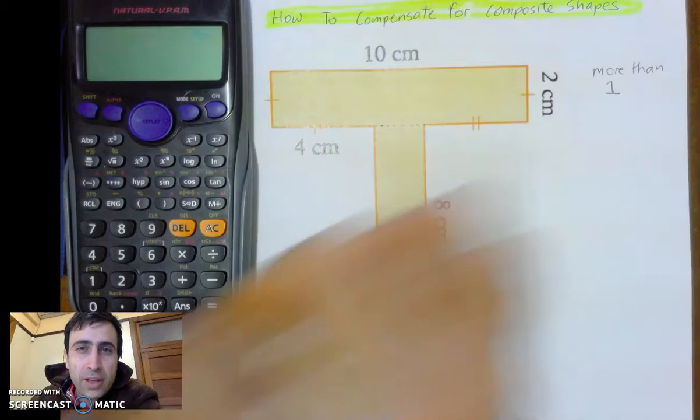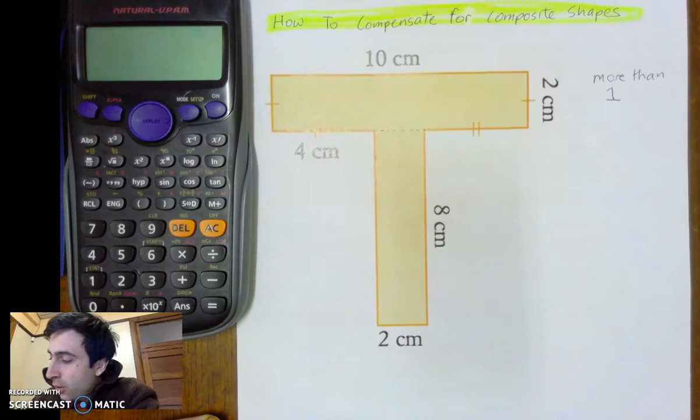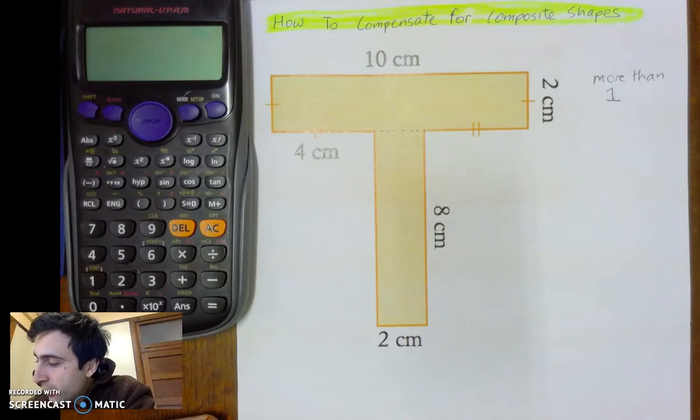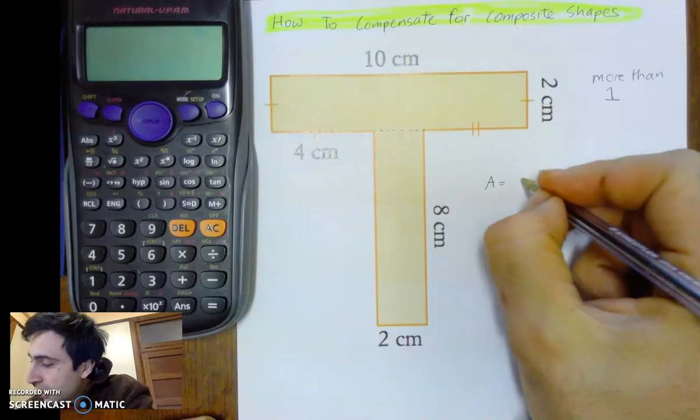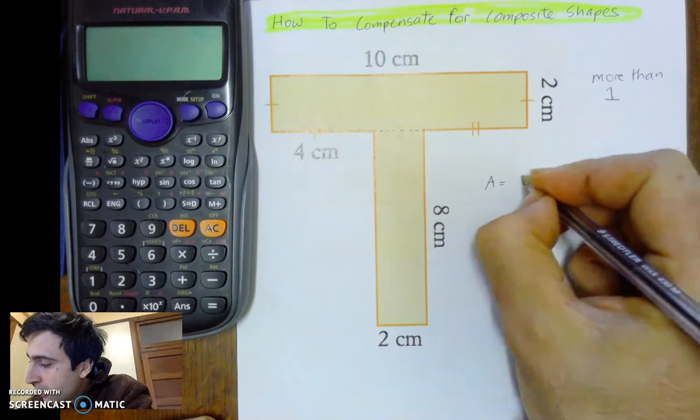And so if we're going to find the area of this, we need to find the area of the first rectangle and the area of the second rectangle.